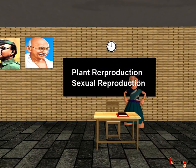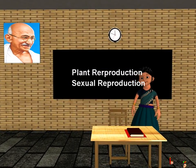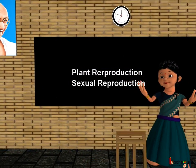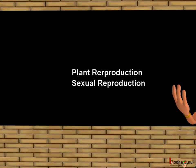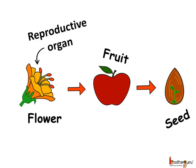Good morning children. Today we shall learn about plant reproduction. The new plant generally grows from a seed. But have you wondered how? As we know, the flower turns into a fruit.